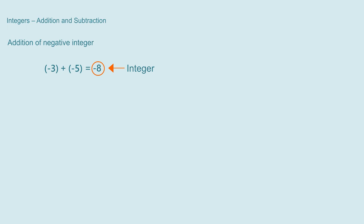This is similar to what happened with natural numbers when added, which also result in natural numbers again. Now let us see what we can say about the subtraction of two integers. If we take both integers as positive integers for subtraction, that is natural numbers, then the answer of subtraction will be an integer, as we have established.